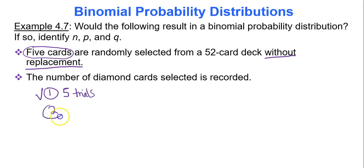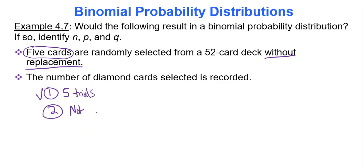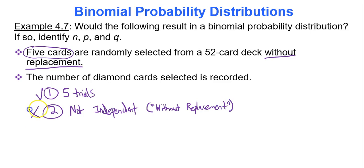On the first trial I pick out a card, but I don't replace it — it says without replacement. That means for the second trial there is now one less card in the deck, which changes the probability of the next card selection from 52 to 51. The trials are not independent because of the keyword 'without replacement.' Without replacement means not independent, so this experiment is disqualified — it is not binomial.